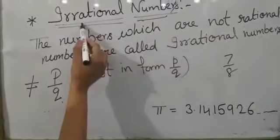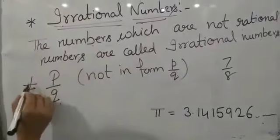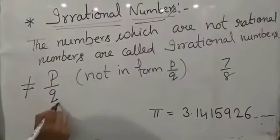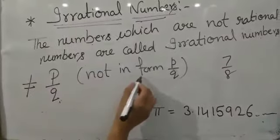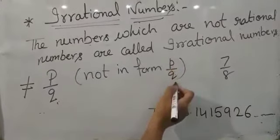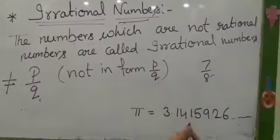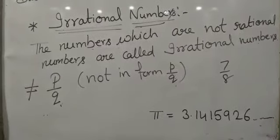But the irrational numbers are the opposite way. The numbers P upon Q ki form mein na ho, not in the form of P upon Q, what do we call it? Irrational number.